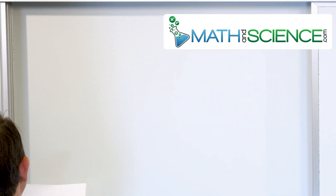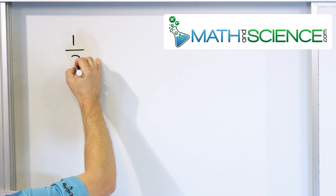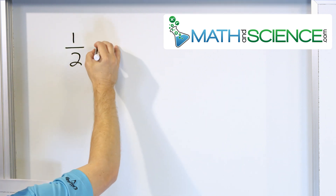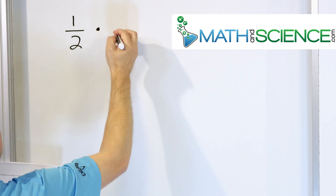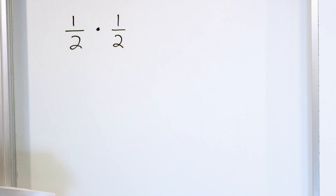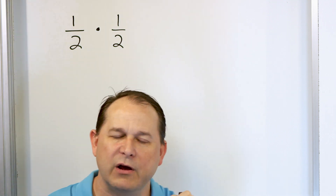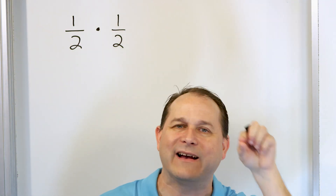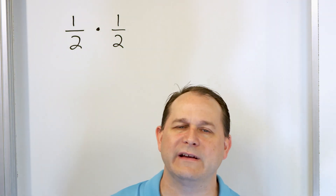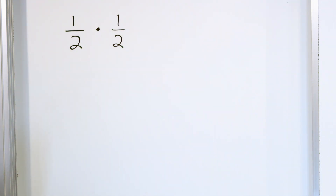Let's take probably the simplest multiplication problem I can come up with: one half multiplied by one half. The dot means multiply — we don't use x's for multiplication anymore because we're going to be using variables and letters, so we use x a lot. When you see a dot, it means multiply, same as before using an x.